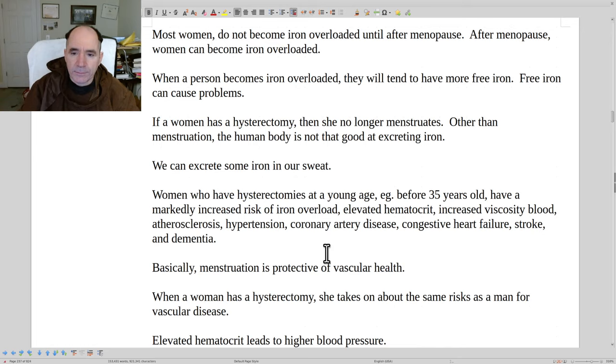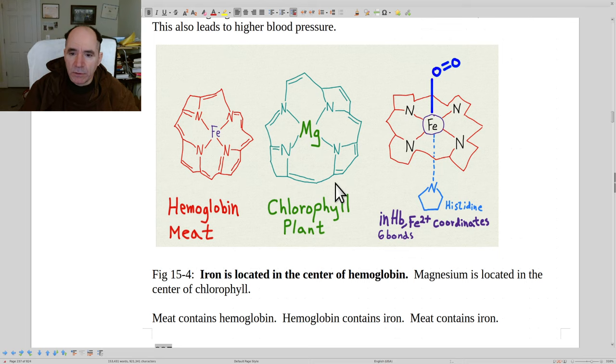Here's a picture of where iron is located. This is the heme of a hemoglobin molecule. Iron is right in the center of hemoglobin and it can bind reversibly to oxygen, O2 right here.